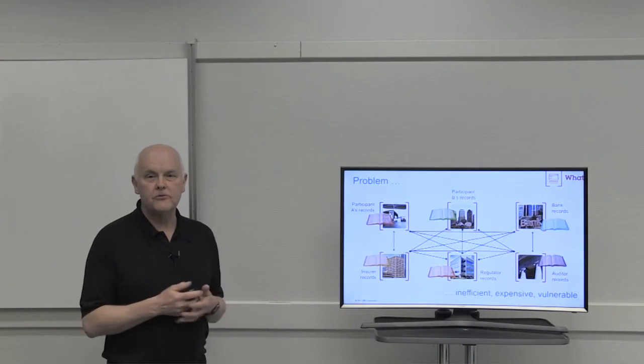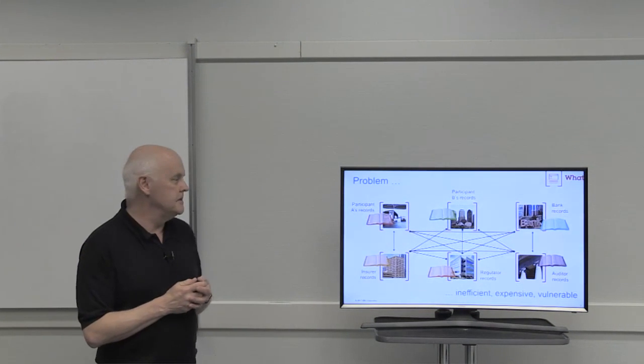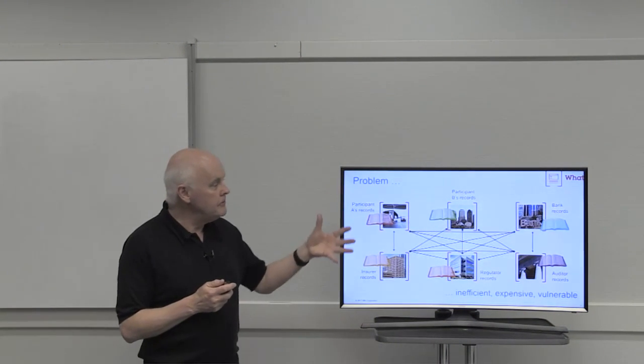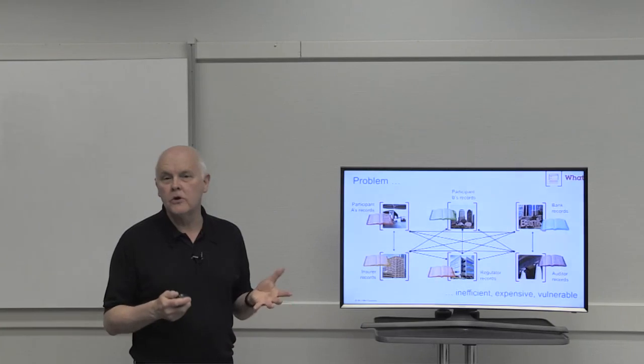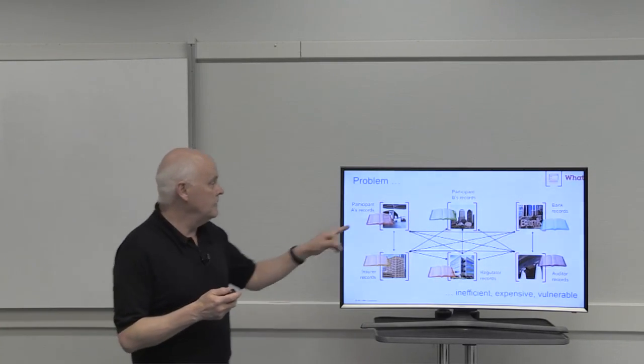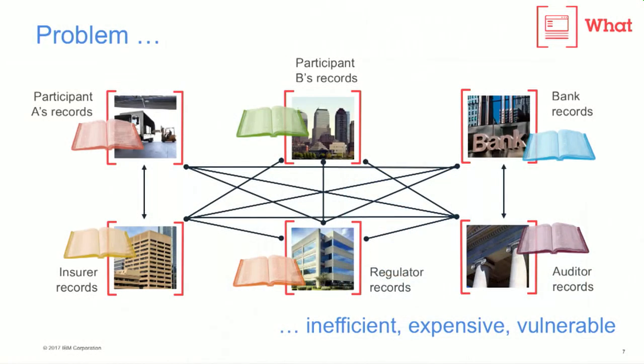Let's step back for a moment and look at how things operate today. Effectively, every member of the business network has their own copy of the ledger, shown here in different colors around the different members of the business network. As I mentioned previously, the ledger's updated every time an asset flows into the organization or goes out of the organization. Each member of the business network who's affected updates their ledger.